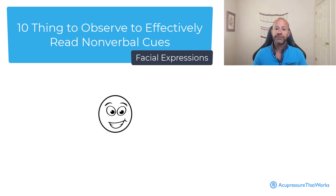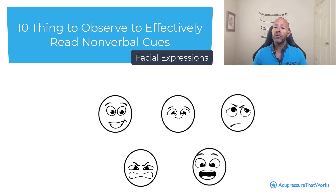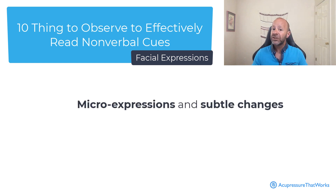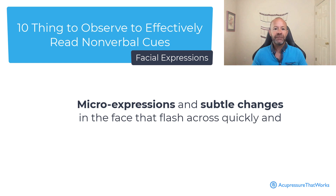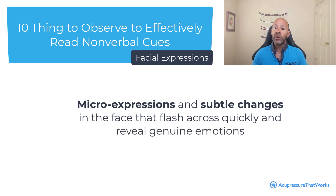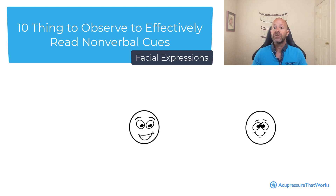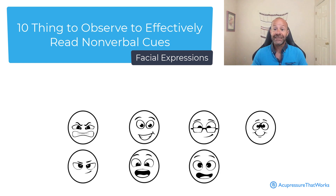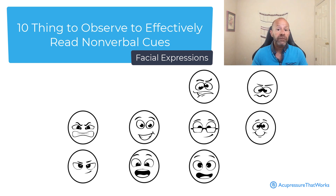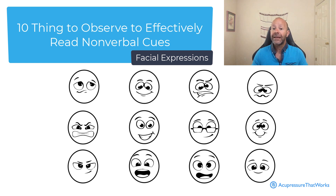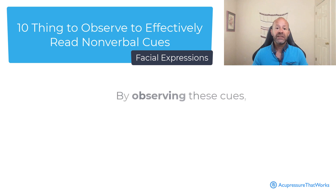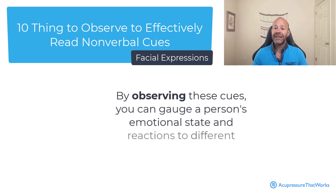Facial expressions. The face is one of the most expressive parts of the body. Pay attention to micro-expressions — subtle changes in the face that flash across quickly and reveal genuine emotions. Common facial expressions include smiles, frowns, raised eyebrows, wrinkled foreheads, and narrowed and widened eyes. By observing these cues, you can gauge a person's emotional state and reaction to different situations.